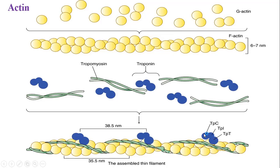Troponin is an important control protein which prevents the interaction between actin and myosin cross-bridges unless the calcium-binding subunit (TPC) combines with calcium ions. Unless TPC combines with calcium, this molecule will not allow cross-bridge formation between actin and myosin. TPT binds troponin with tropomyosin and restores calcium ion sensitivity, thus regulating actin activity depending on calcium concentration.